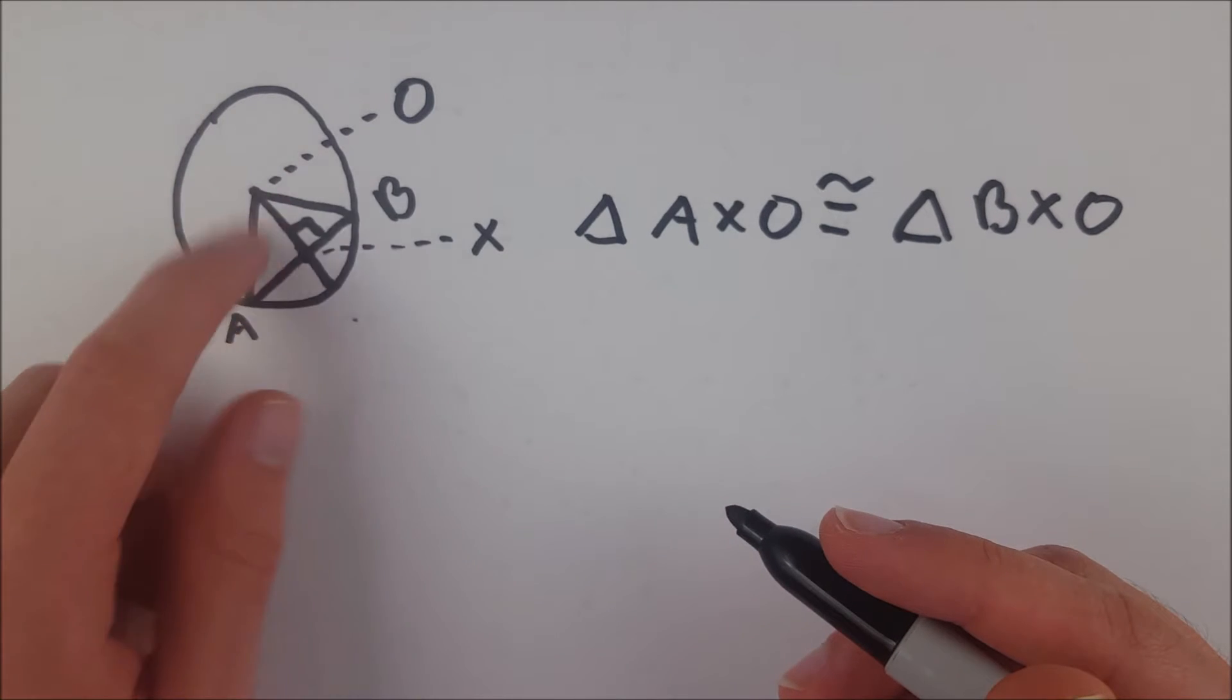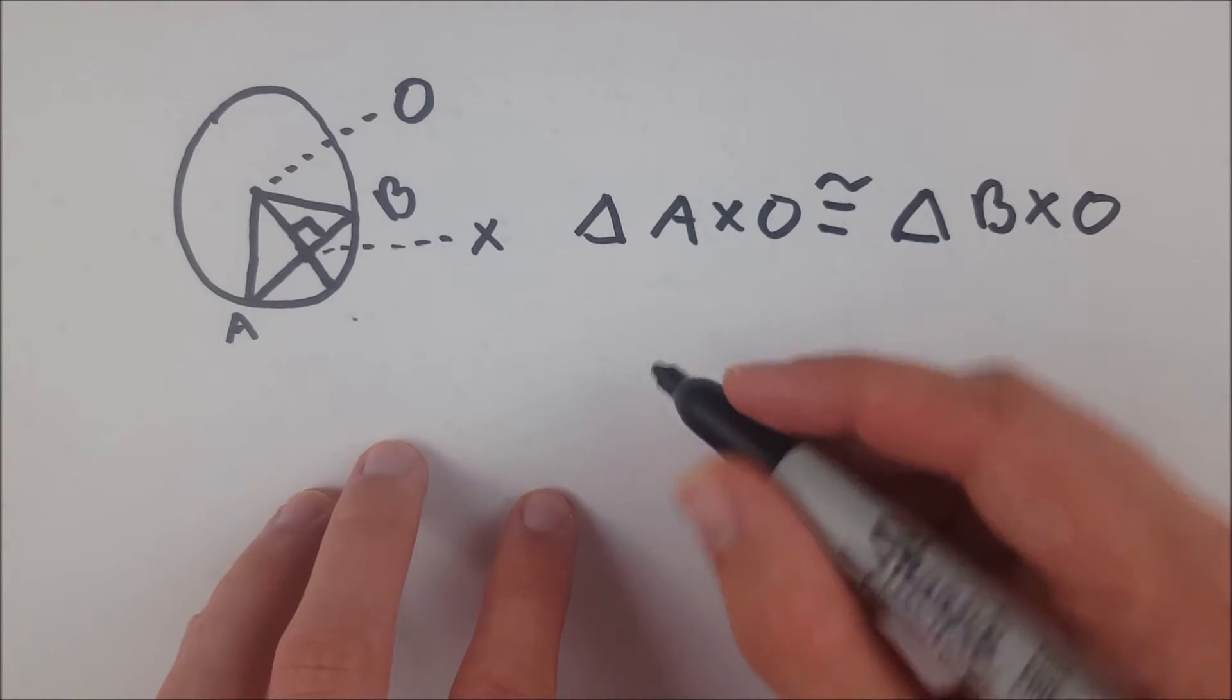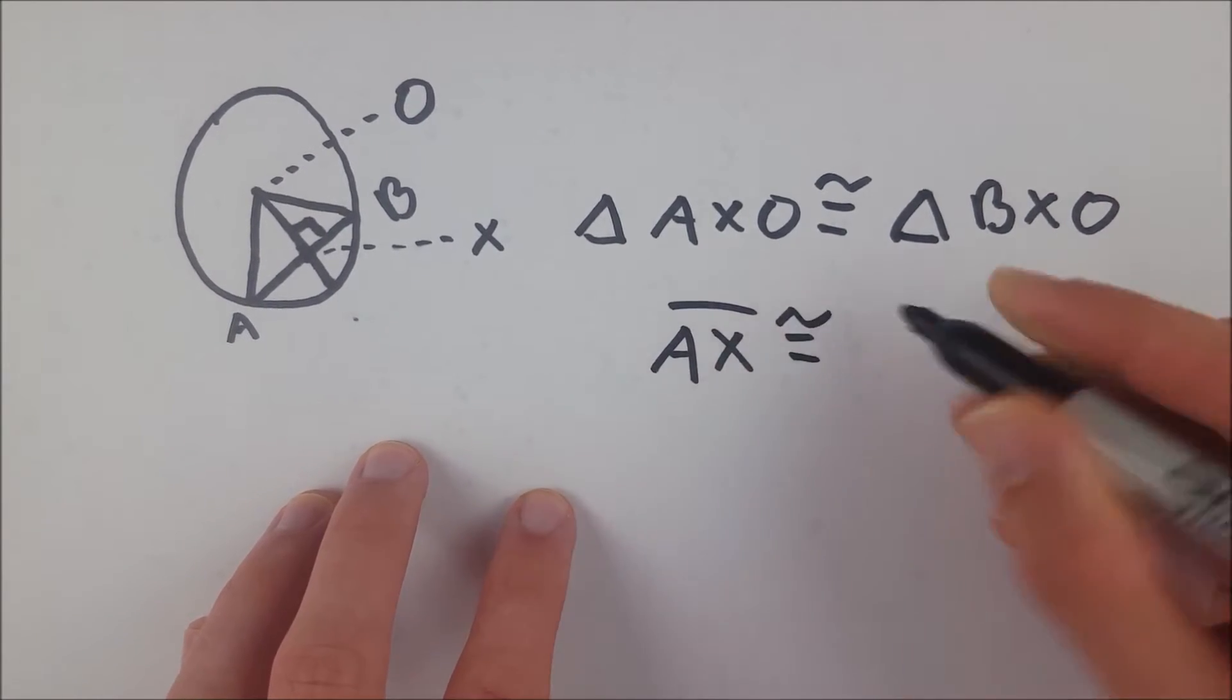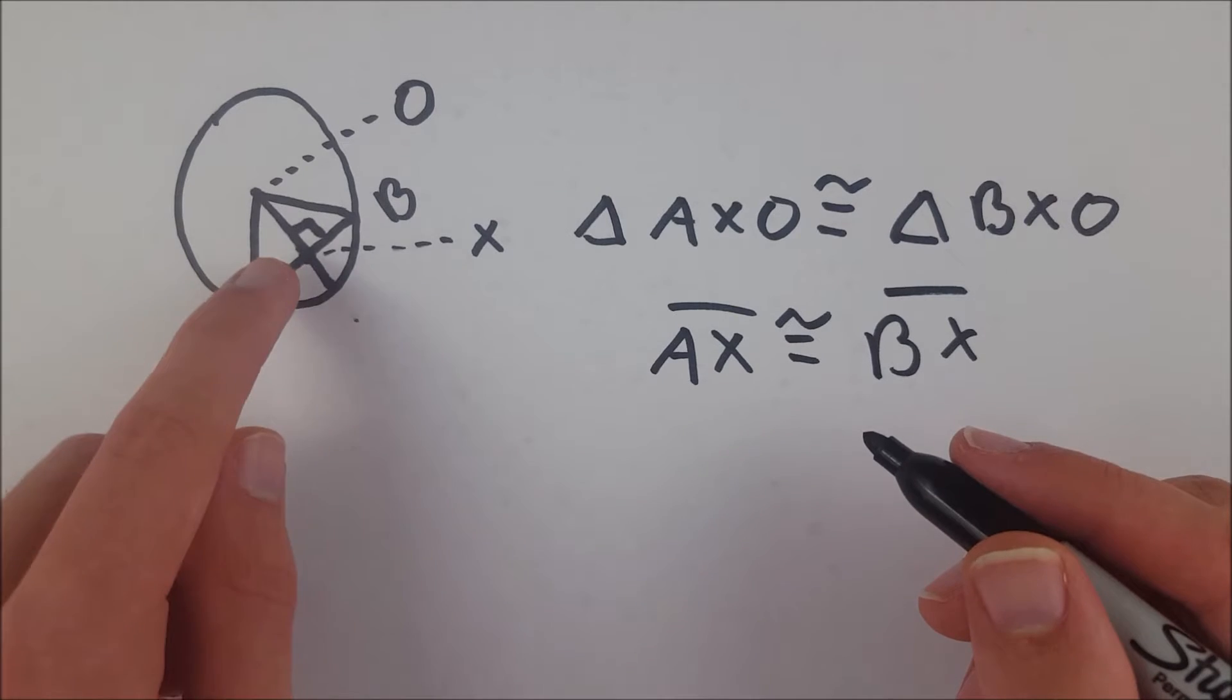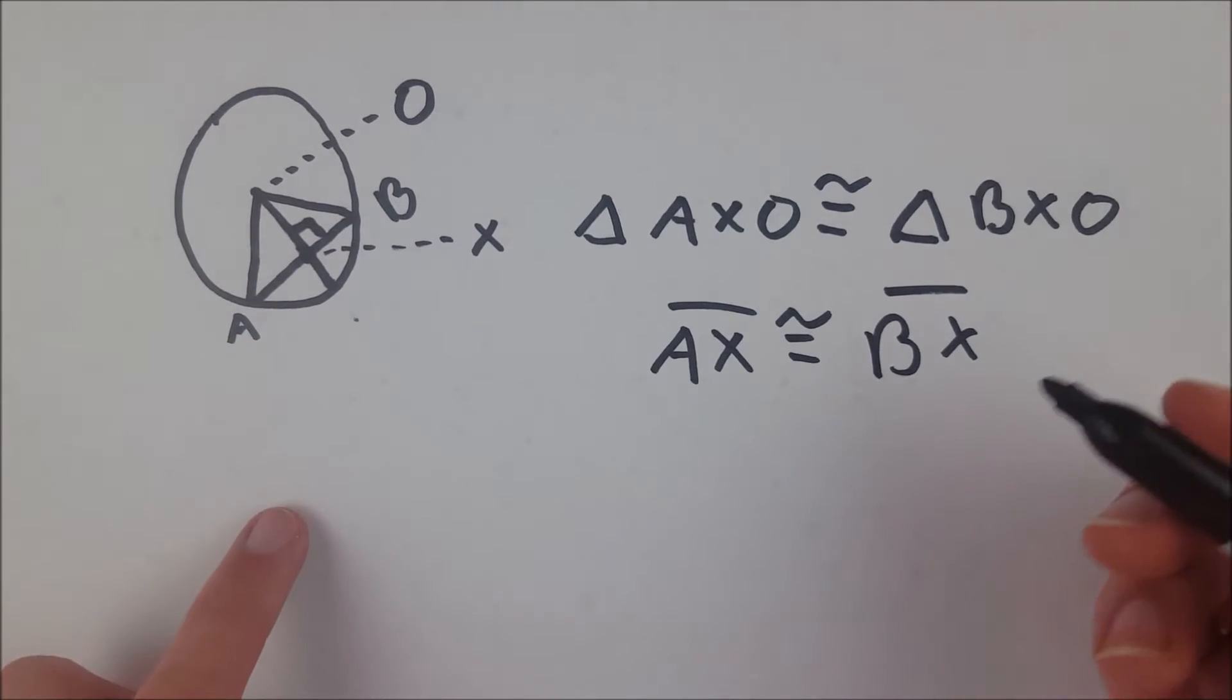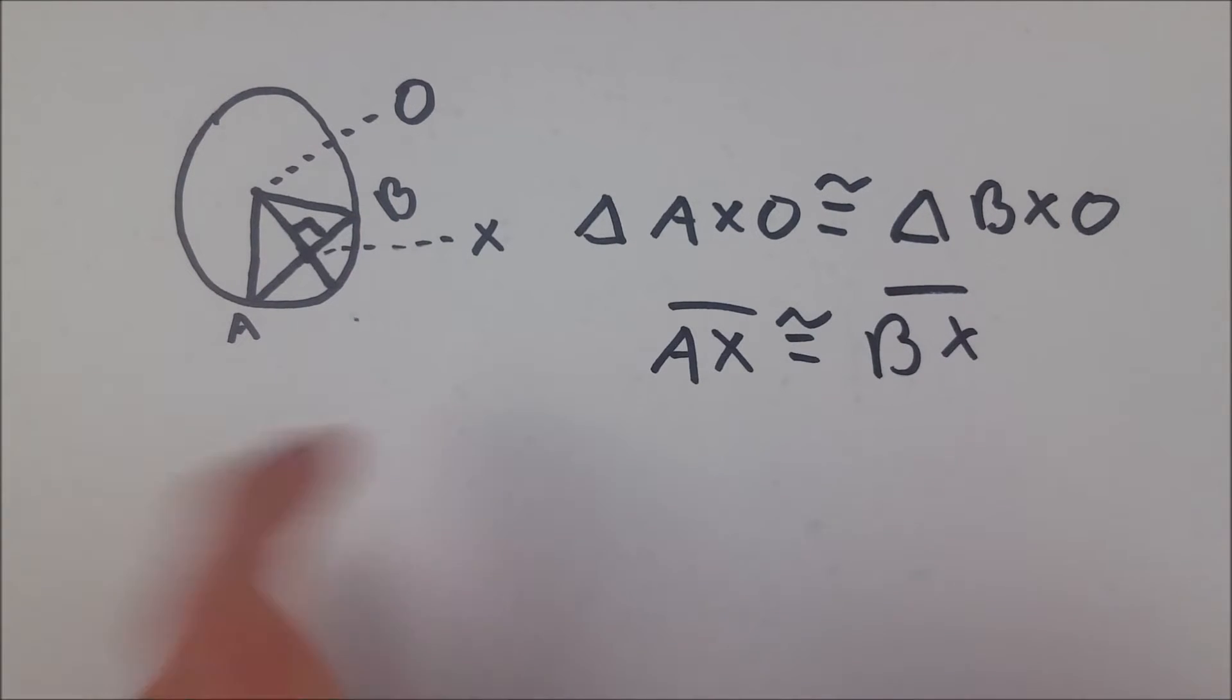Because these two triangles are congruent we know of course that their corresponding sides are congruent. That means that segment AX is congruent to segment BX. So AX is congruent to BX and since X is the point where the radius intersects the chord, that means that the radius does in fact bisect chord AB.